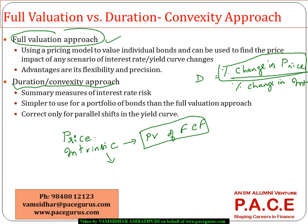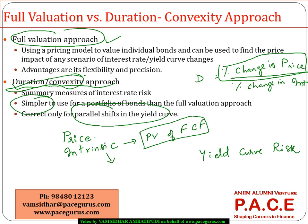That is the duration and convexity based approach. When using duration or convexity, I am not computing all future cash flows and finding their present values. If interest rates change by 1%, based on duration you can say the price will change by a certain percentage — it's a straightforward, easier-to-compute calculation. But it only works if there is no yield curve risk.